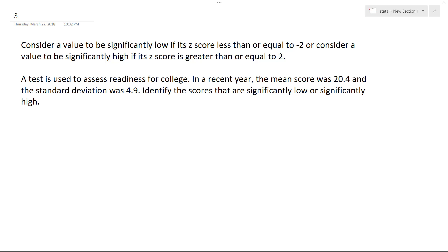What we have here is we want to consider a value to be significantly low if its z-score is less than or equal to negative 2, or to be significantly high if it's greater than or equal to 2. A test is used to assess readiness for college. In a recent year, the mean score was 20.4 and the standard deviation was 4.9.